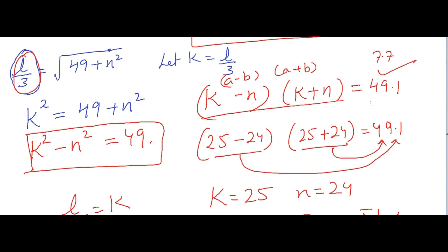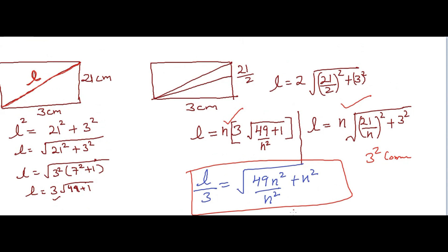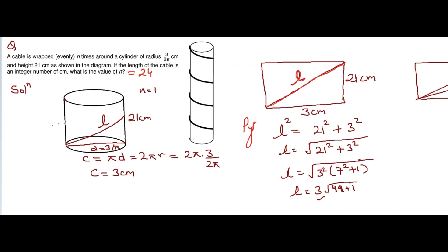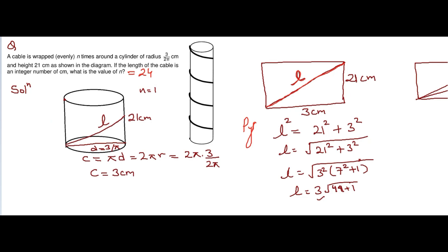We got two integers satisfying the condition: k = 25 and n = 24, giving l = 75 centimeters. You can verify no other factorization works. Thank you for watching — please don't forget to subscribe and share this video with your friends. See you in my next video, bye bye!